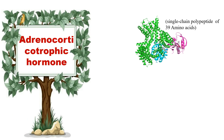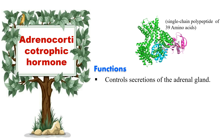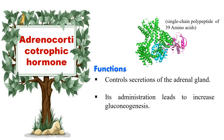Next hormone is adrenocorticotrophic hormone (ACTH). ACTH consists of 39 amino acids, of which the first 13 amino acids are cleaved from the N-terminus to form alpha-melanocyte-stimulating hormone (alpha-MSH). After a short period of time, ACTH is cleaved into alpha-MSH and a peptide of unknown activity. Its function is to control the secretion of the adrenal gland and stimulate gluconeogenesis — the formation of new glucose.